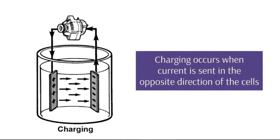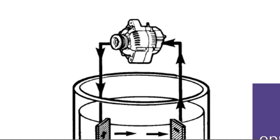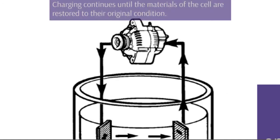Charging occurs when current is sent in the opposite direction of the cells. Charging continues until the materials of the cell are restored to their original condition.